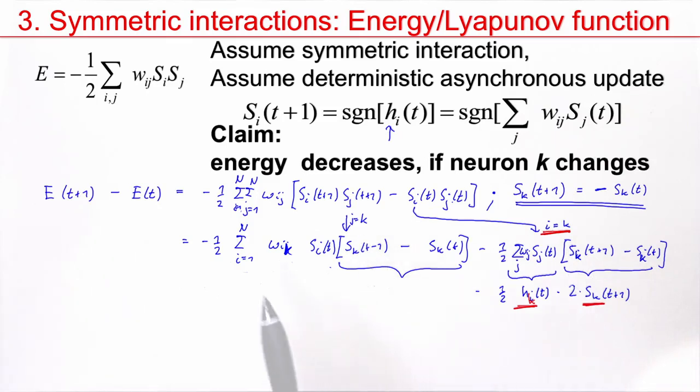Now, neuron K has changed. But, if it changes, then S_K at times T is just the negative of the state at times T plus 1. So, I can write this as 2 times S_K of T plus 1. And, after factor 1 half. This was the case I is equal to K. Since, I is equal to K, I can actually replace the index I here by the index K. It's the same neuron. So, now I have H_K here and I have S_K there. So, this was the term I equal K. Let's now work on the other term, J equal K. Here, I have a sum W_IK S_I. Now, here we assume the symmetric interactions. We exploit the fact that we have symmetric interactions. And, therefore, W_IK is equal to W_KI.